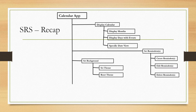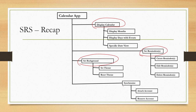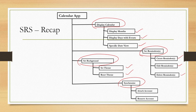The functional hierarchy is shown here. There are four top-level functions: display calendar, set reminders, set background and synchronize. There are sub-functions like display month, display days, display specific date, then create reminders, edit reminders, delete reminders, set theme, reset theme and attach account, remove account.